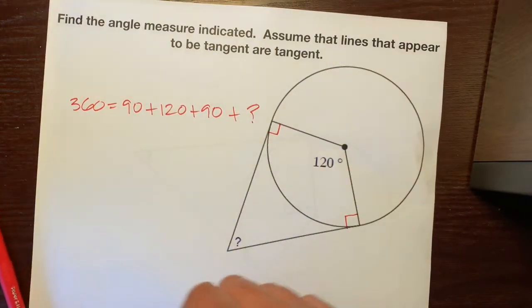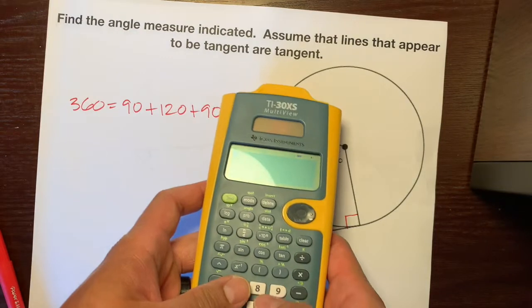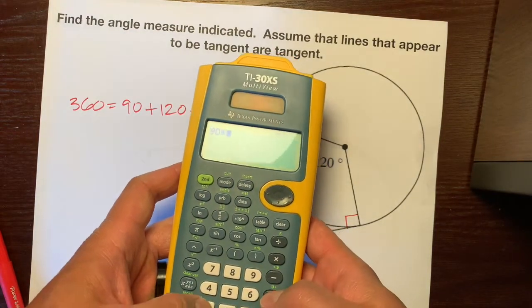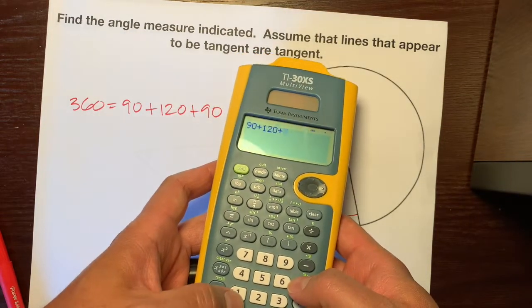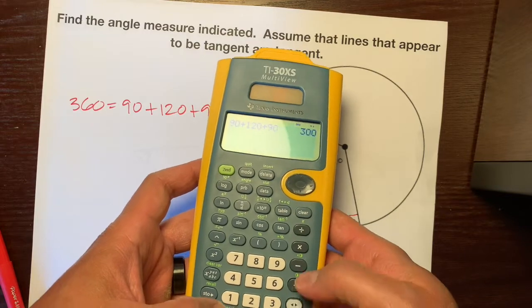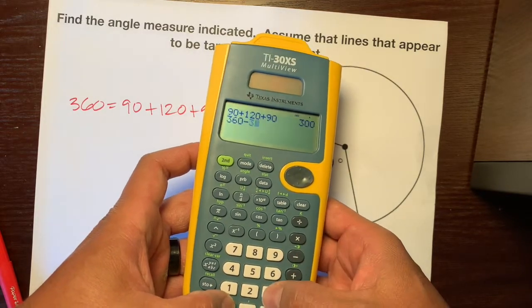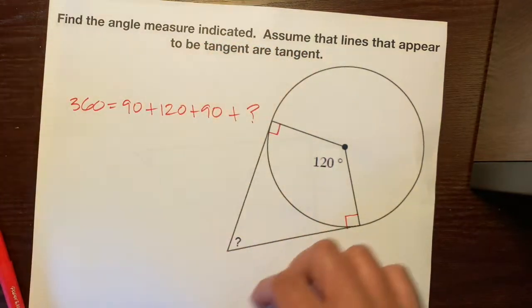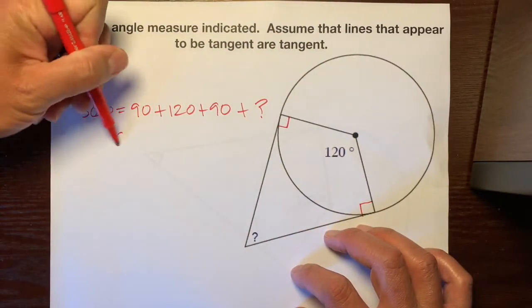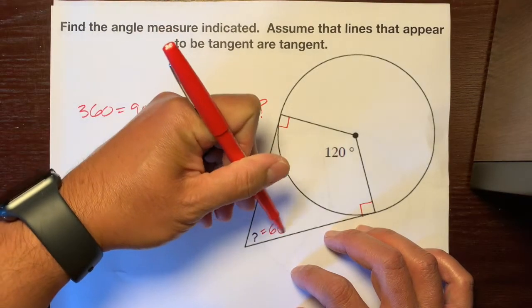So there are the four angles whose sum is 360. These are 90 because the tangents and the radius are perpendicular. Now let's just grab our calculators and add 90 plus 120 plus 90, and subtract that answer. 360 minus 300 is 60 degrees. So there is your final answer.